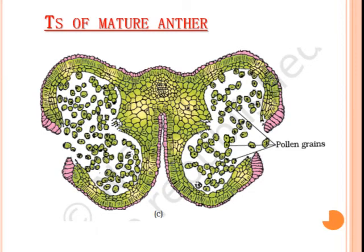The pollen grain is a haploid body with a double-layered wall. The inner layer is called the intine and the outer layer is called the exine. The exine may be thin or absent at certain places called germ pores.